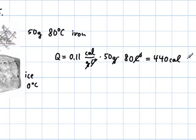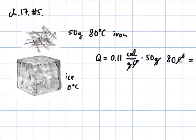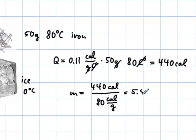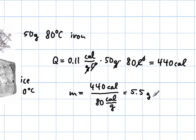Multiply those three numbers, the units here cancel or divide, and we come up with 440 calories. And then it says how many grams of ice will melt? Similar calculation as before. M equals mass equals 440 calories divided by 80 calories per gram as the latent heat of fusion. And that comes out to 5.5 grams of ice.